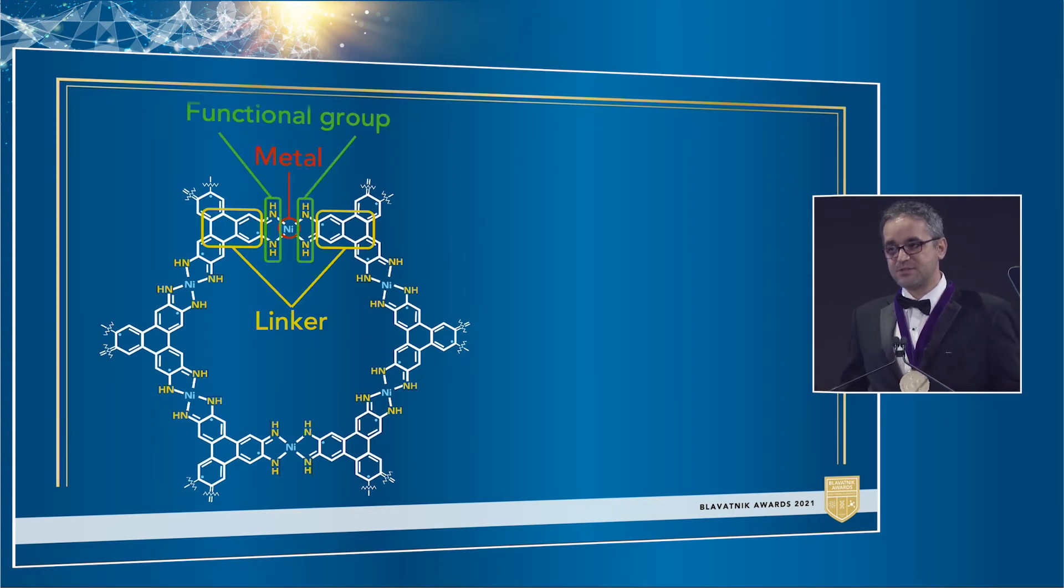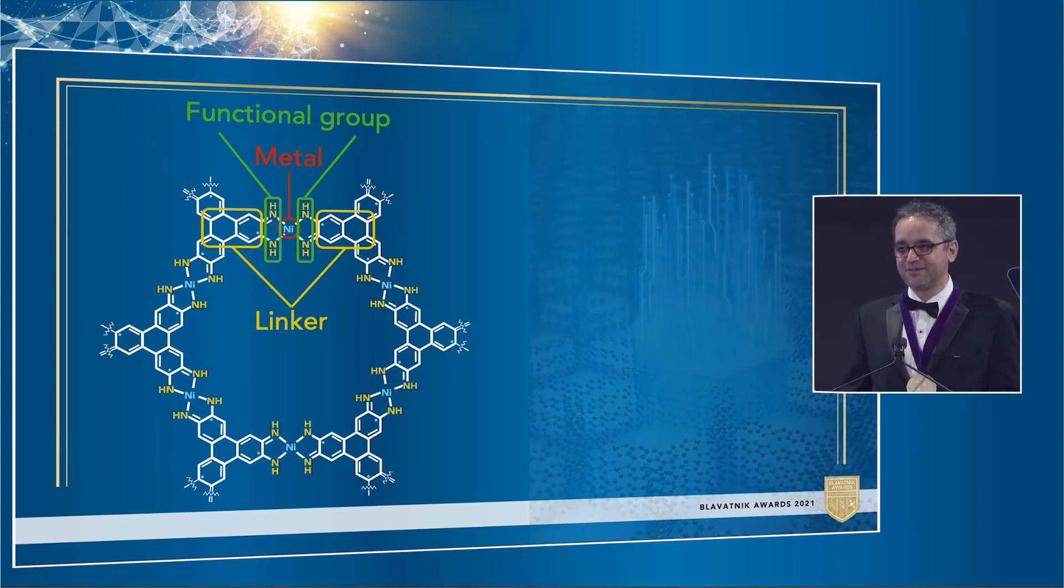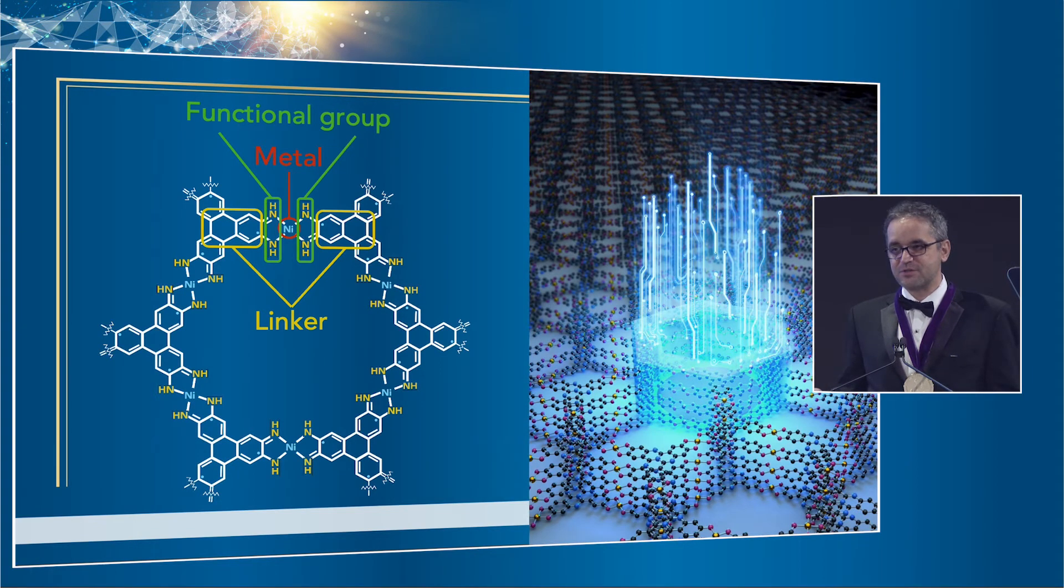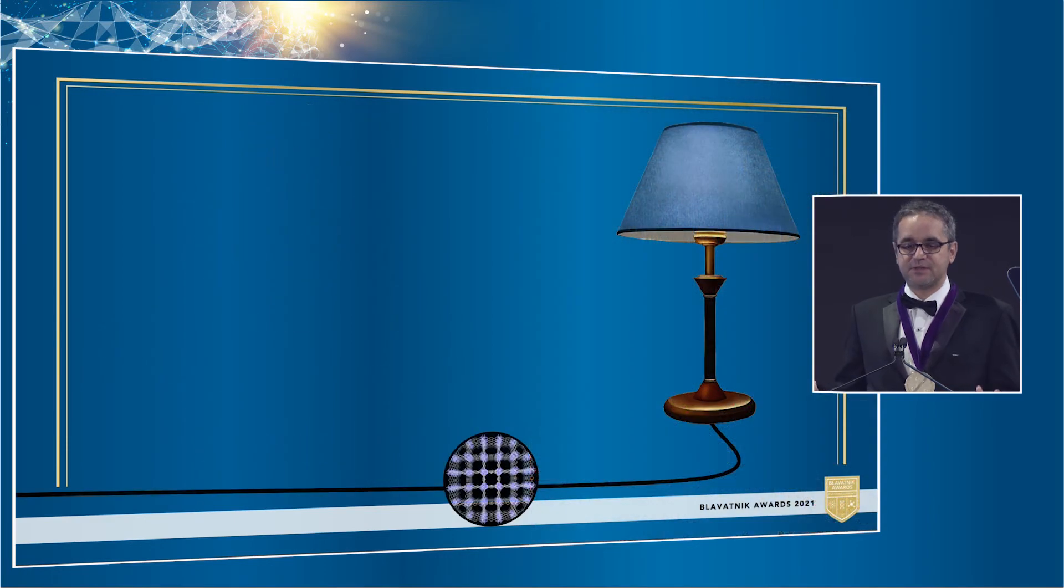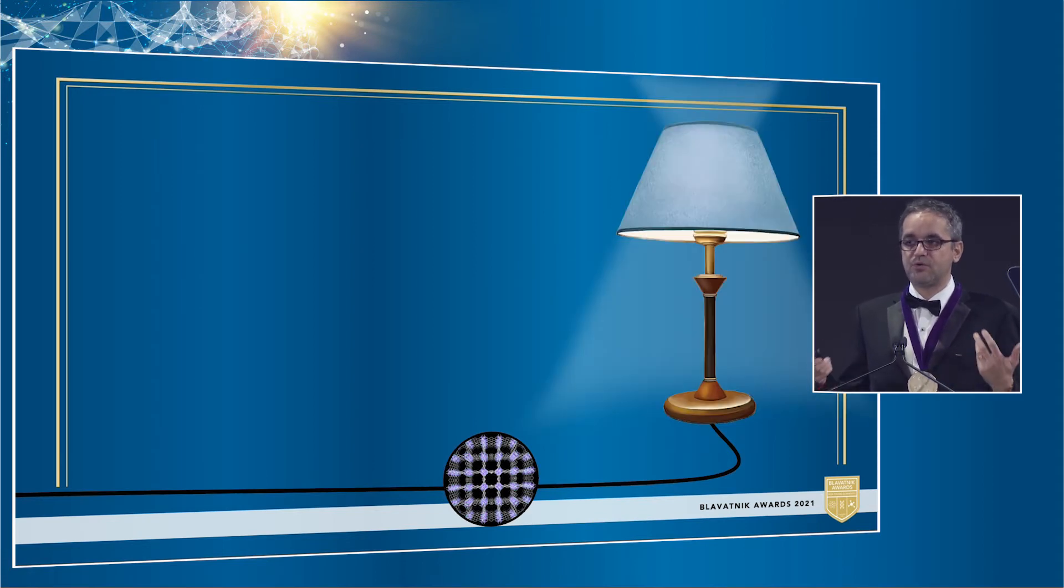When we stack these sheets, we can get our sponge structure, except now we can get electricity to flow through it. I really couldn't believe it when my students first showed me the data. We'd taken that porous structure and we were able to conduct electricity through it. We essentially took the properties we wanted from insulators and conductors and made a whole new kind of material. That was really exciting and it opened up a whole bunch of new possible applications for us.